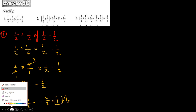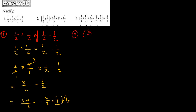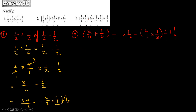Now let us do Question number 3: 3 upon 4 plus 1 upon 2, this is division, divide 2 whole 1 upon 2, minus 2 upon 3 into 7 upon 8, again division 1 whole 1 upon 4. First of all we will change all the mixed fractions into improper fractions.